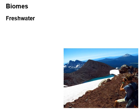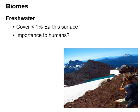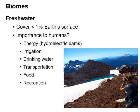Let's go through some of the watery biomes. Freshwater biomes cover less than 1% of the Earth's surface, but they're really important to humans for obvious reasons: we use fresh water for generating electricity via hydroelectric dams, for irrigation to feed plants and animals we grow for consumption, for drinking water, for transporting goods and materials, for food that comes out of freshwater biomes, and for recreation. This Alpine Lake — a lake at very high altitude — is a nice place to recreate.